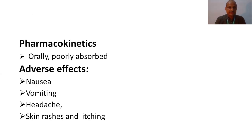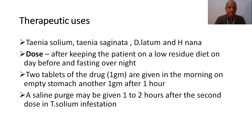Coming to the pharmacokinetics: niclosamide is orally administered and poorly absorbed. It is metabolized in the liver and excreted in the urine. The adverse effects are common conditions like nausea, vomiting, headache, and there will be allergic manifestations like skin rashes and itching. Coming to the therapeutic use of niclosamide: it is the drug of choice in Taenia solium, Taenia saginata, Diphyllobothrium latum, and Hymenolepis nana.